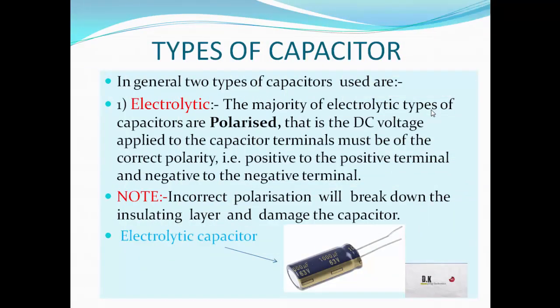Generally there are two types of capacitor. The first is the electrolytic capacitor, which is polarized — one terminal is always positive and the other always negative. It is used for DC voltage supplies. If incorrect polarity is applied, the insulator layer may be damaged or the capacitor may break down, so we must supply the correct polarity voltage.